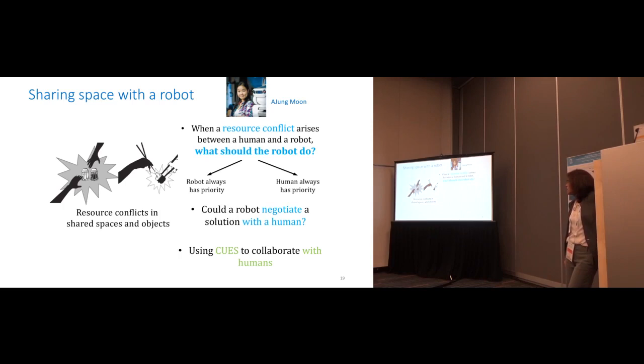One of the early examples that we did with Adjun and Moon is trying to understand, if a robot and a person are sharing objects and sharing space, then there's a resource conflict. In other words, both the robot and the human are going after the same object at the same time. What should the robot do? Should the robot yield? Should the human yield? Who has priority? And is it possible, just as when you and your partner are in the kitchen and you're both reaching for the same knife, to negotiate who gets the knife? I get the knife, by the way.